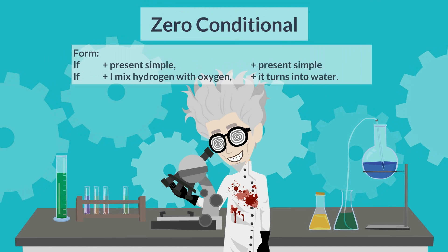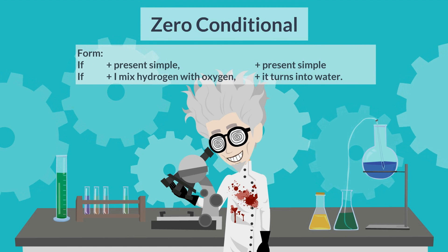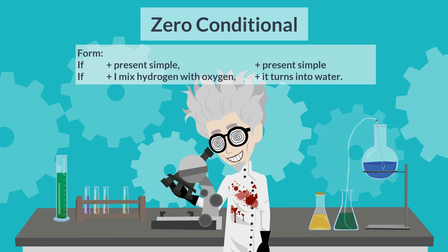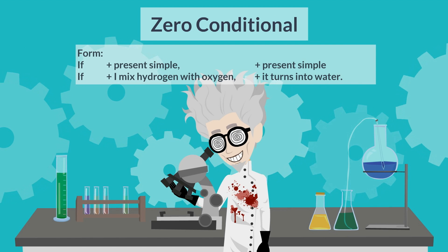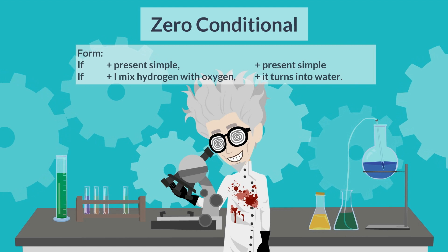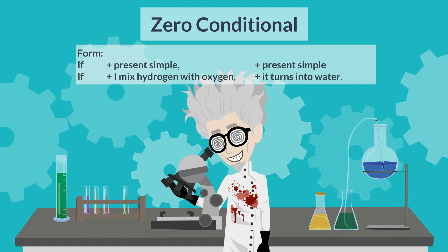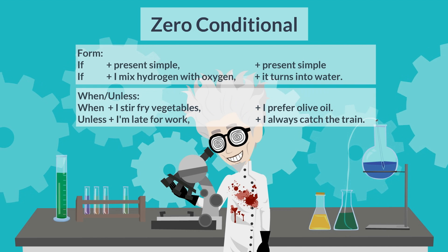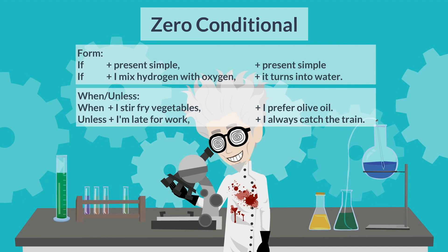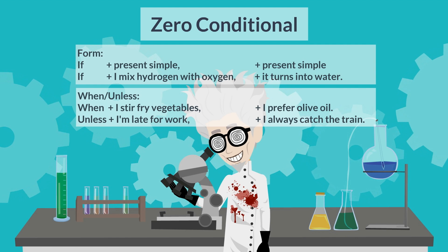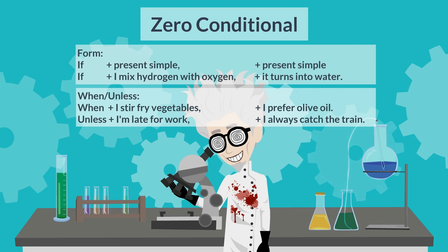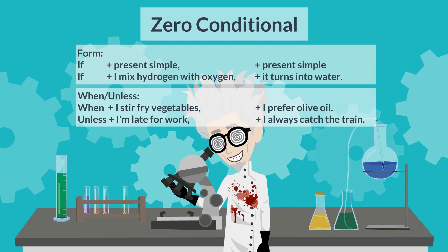Now let's have a look at the form of the zero conditional: "if" plus present simple, comma, plus present simple. "If I mix hydrogen with oxygen, it turns into water." We can also use "when" or "unless" to replace "if". "When I stir fry vegetables, I prefer olive oil." "Unless I'm late for work, I always catch the train."